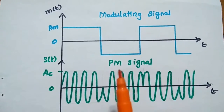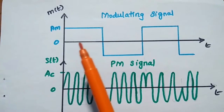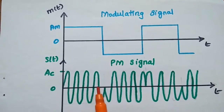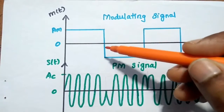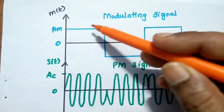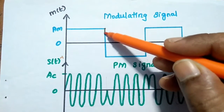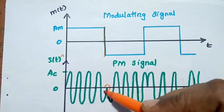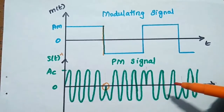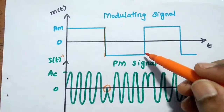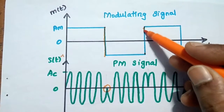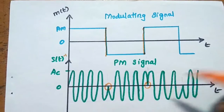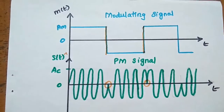During the positive half cycle of the modulating signal, the phase of the modulated signal remains the same. Whenever there is a change in modulating signal amplitude — from 1 to minus 1 — there is a sudden phase change in the phase modulated signal. So whenever the signal switches from one amplitude to another amplitude, there will be a phase change. This behavior is observed for a pulse signal as the modulating signal.